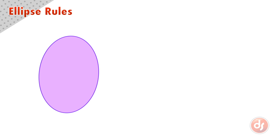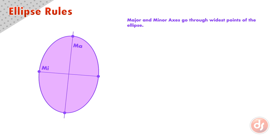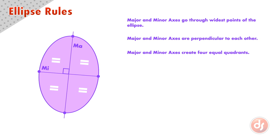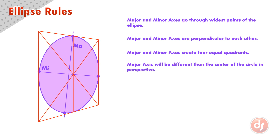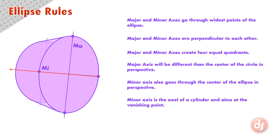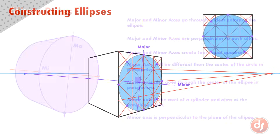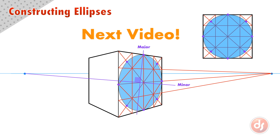Ellipses can be challenging, so let's review the rules that will make your ellipses look correct. The major and minor axes go through the widest points of the ellipse. The major and minor axes are perpendicular to each other. The major and minor axes create four equal quadrants. The major axis will be different than the center of the circle in perspective. The minor axis goes through the center of the ellipse in perspective. The minor axis is the axle of a cylinder and aims at the vanishing point, making it perpendicular to the plane of the ellipse. This list will keep your ellipses looking correct, and constructing ellipses will be the topic of our next video.